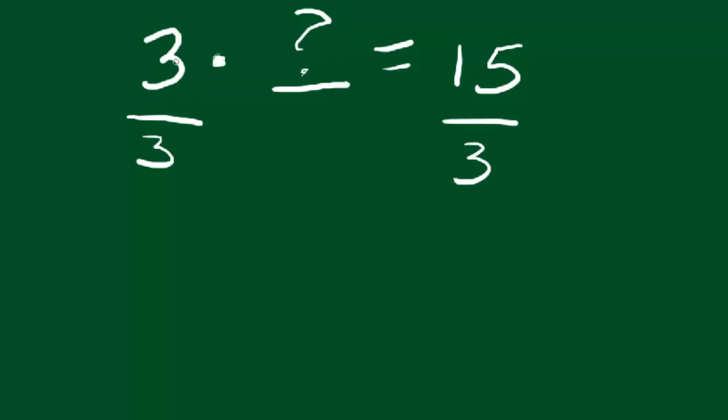3 divided by 3 is just 1, right? So we can cancel these out. So now whatever our unknown is, it's one of those unknowns. And then we come over here and we say, what is 15 divided by 3? Well, we know that if we multiply 3 times 5, so we take one of those times 5, the answer is 5 over 1, or we get 5.